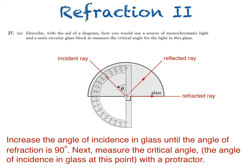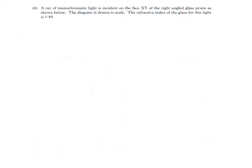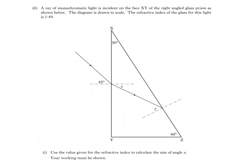Part B then says, a ray of monochromatic light is incident on the face XY of the right angle glass prism as shown below. The diagram is drawn to scale. The refractive index of the glass for this light is 1.49. Then part 1 asks us to use the value given for the refractive index to calculate the size of angle X. Your working must be shown.